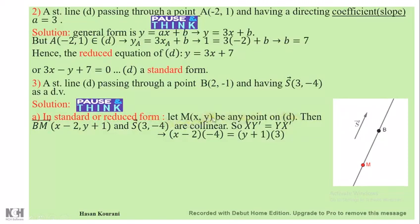We just know that it passes through B and has direction vector S. Then BM vector has coordinates (x - x_B, y - y_B).